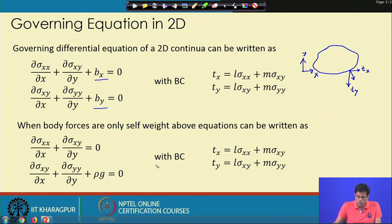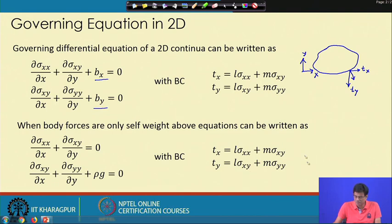With this, the two boundary conditions involve l·σxx + m·σxy, where l and m are direction cosines. We are already aware of these boundary conditions.